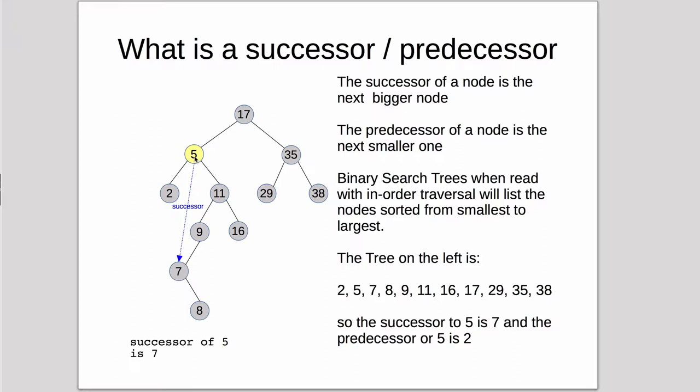So the successor for 5 we said is 7, so the way you find that, if you have a node with two children, the successor is going to be greater than 5, so it's going to be in this subtree. This whole subtree is greater than 5. It won't be up here.